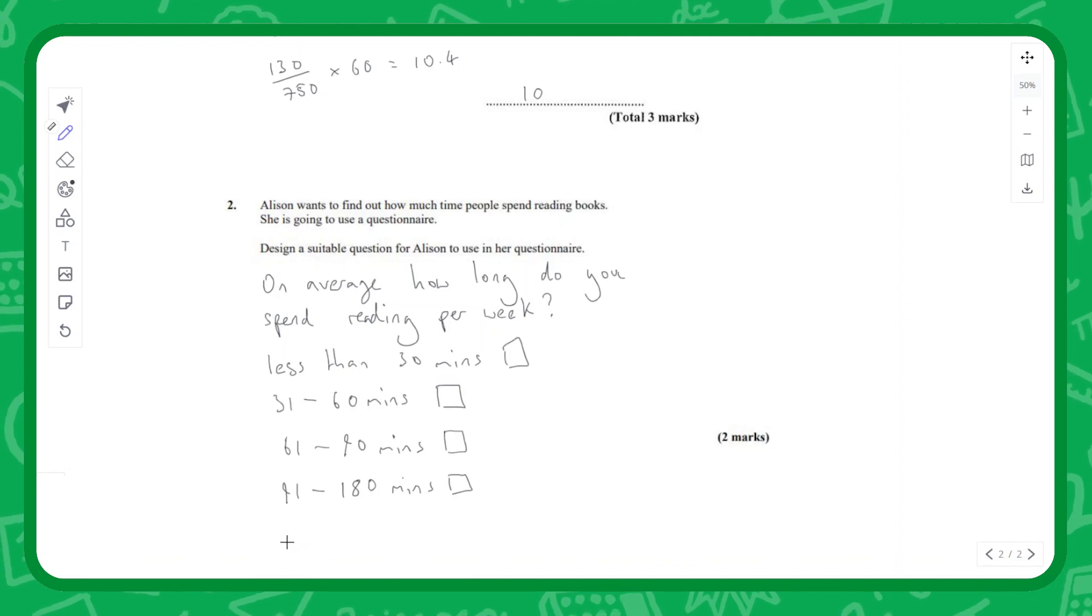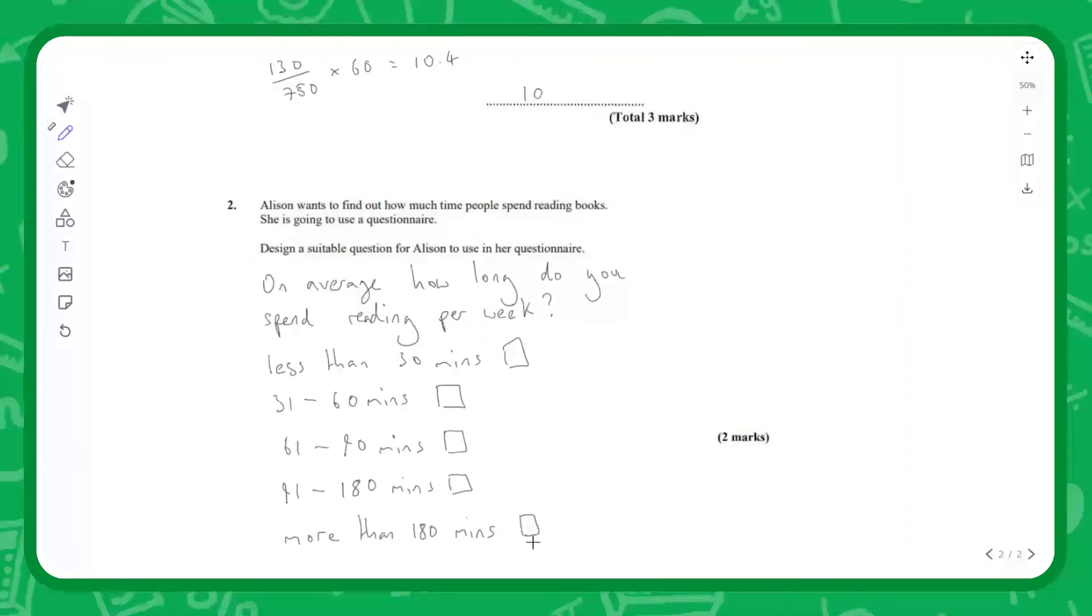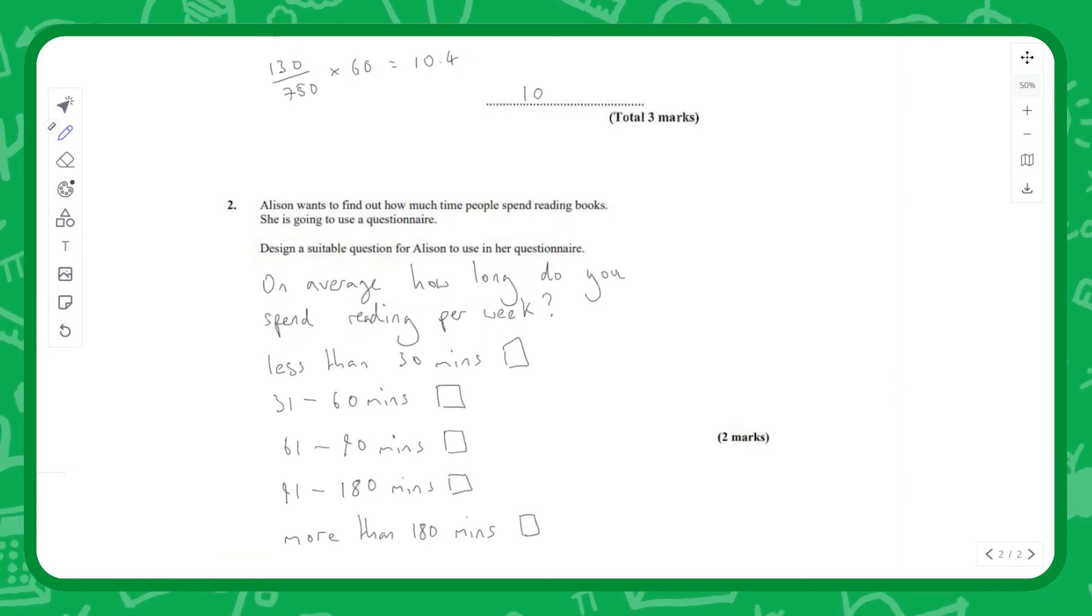And the people who have the luxury of reading for more than three hours a week, we could say more than three hours. Again, that will allow us to capture everyone's results. There won't ever be a case where someone doesn't have a box to tick. That would be a fairly good way to lay out our questionnaire, and that's the end of the chapter.